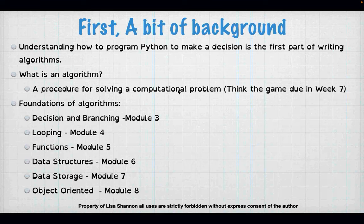The foundations of algorithms are decisions and branching, which is what we're doing this week. Looping is next week, and that is basically making decisions repeatedly based on changing data. Functions - which is encapsulating your code - we'll talk about local scope this week. We're going to talk about blocks of code that run based on a decision. In Module 5 we get to take everything from the last four modules and name it. Module 6 covers data structures, Module 7 is data storage - writing stuff to disk and reading from disk. Module 8 is the final object-oriented module, another way of encapsulating data things together.